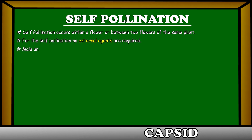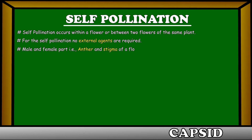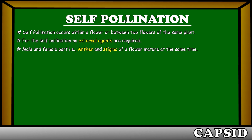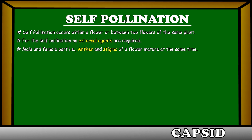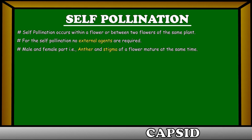In self-pollination, male and female parts, that is, anther and stigma, of a flower, mature at the same time.